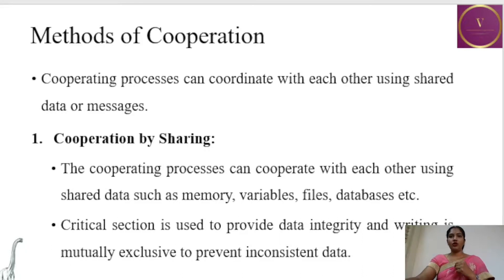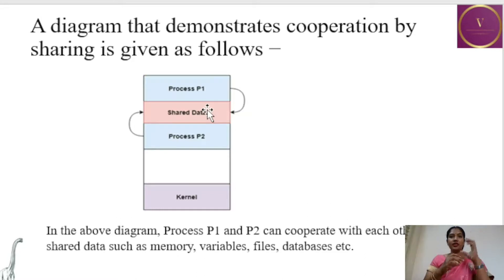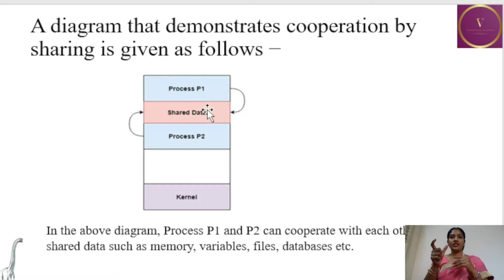In the diagram, process P1 and process P2 are both sharing the shared data — this is the shared data space in memory being shared by process 1 and process 2. P1 and P2 can cooperate using shared data such as memory, variables, files, database, etc. The problem occurs only when both processes try to write at the same time, leading to inconsistency. For that reason, P1 and P2 are mutually exclusive: when one process is writing, the other will be waiting, ensuring consistency in the shared data space.